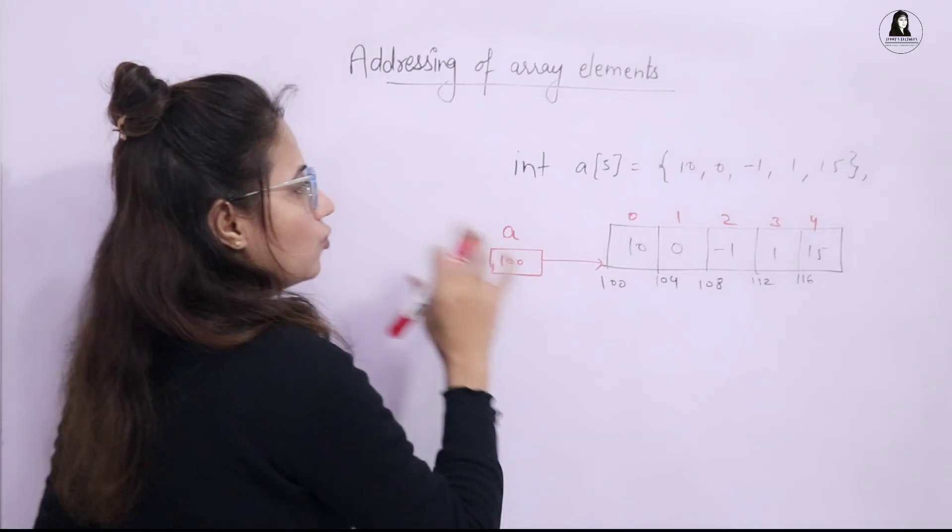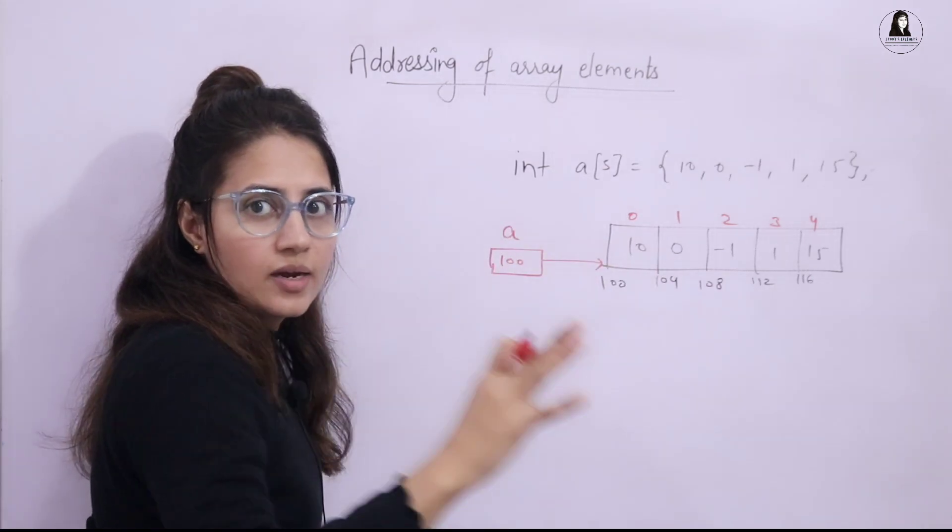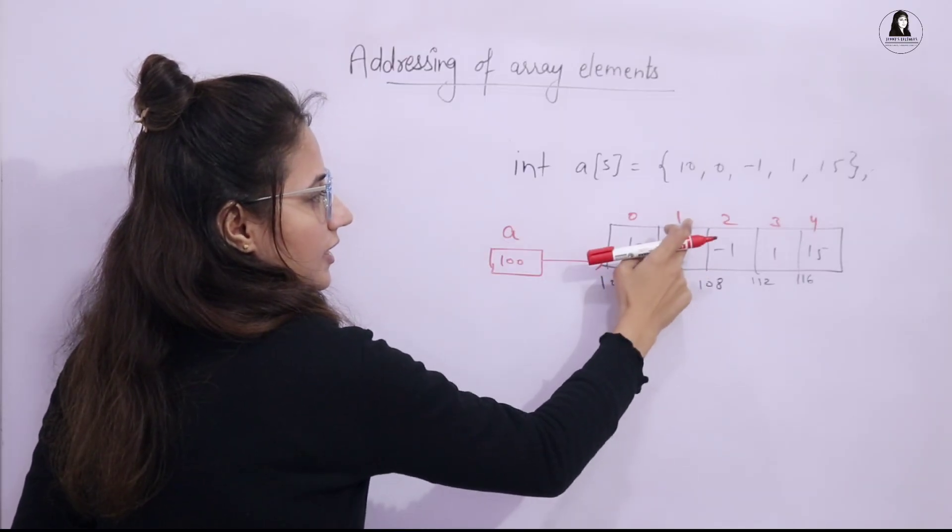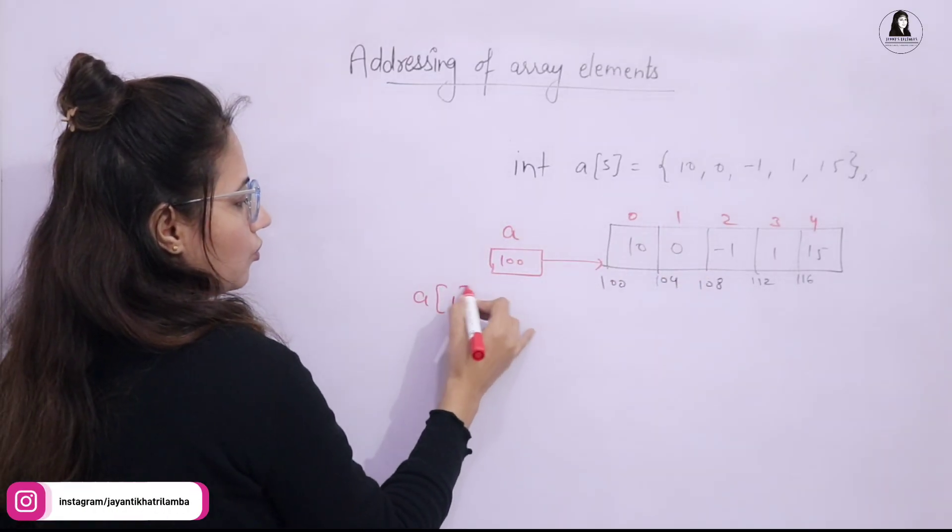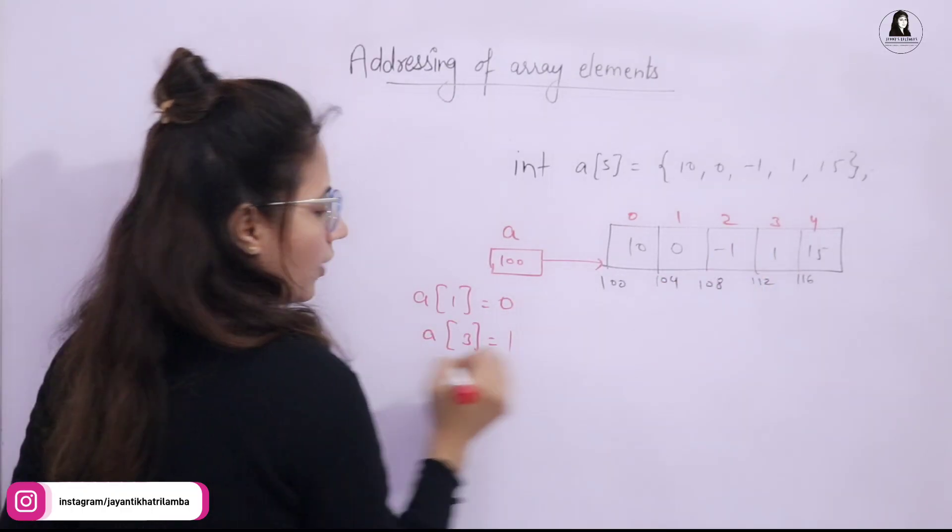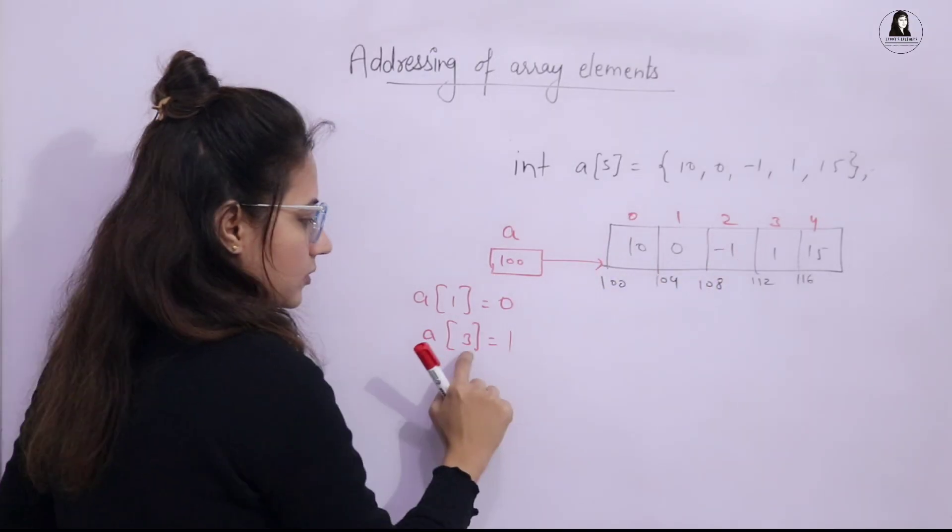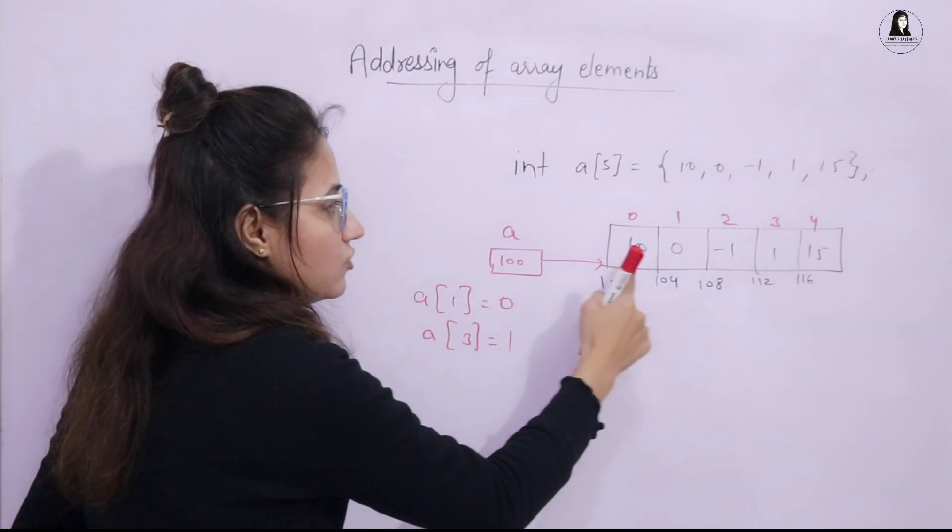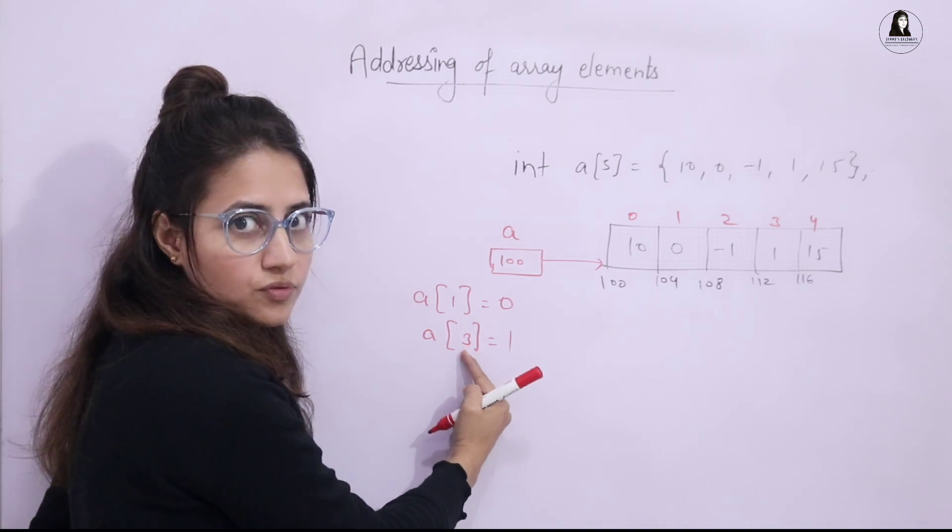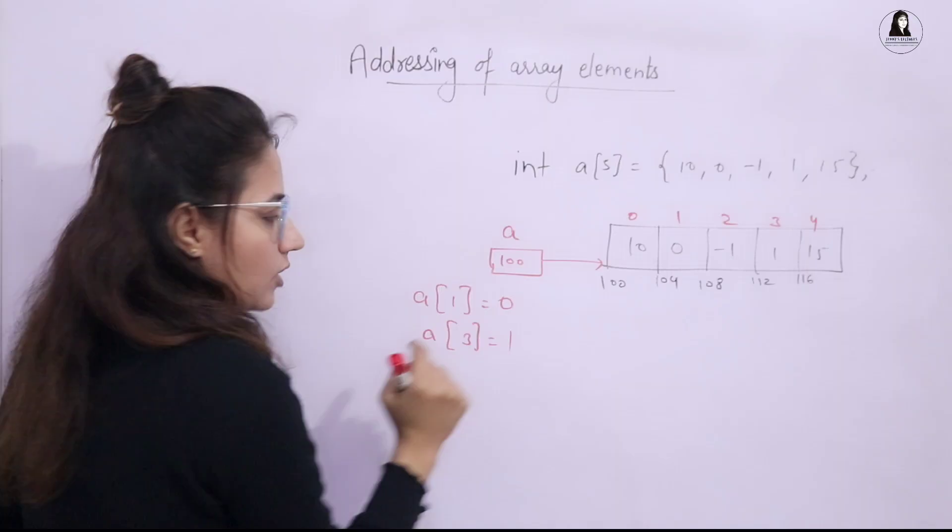So see, now if you want to access the array elements, then directly we can access any array element randomly. So if I want to access this element, the index is a, what you have to write: a of 1 and it will give you 0. If I write a of 3, it will give you 1. It's not like the third element 1, 2, 3. No, this index is actually the offset, means the distance from the first element. How many steps you need to take to reach this offset, third offset? So 1, 2, 3. So this is the output 1.